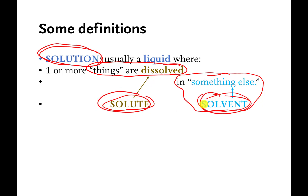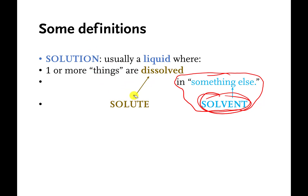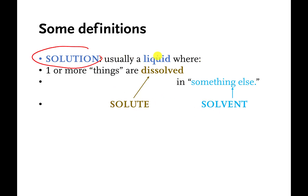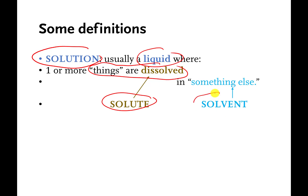The problem is these words all sound pretty similar and are spelled similarly, but they all mean something different. You're going to have to know what they mean because there are equations coming up in later videos where these words are used very precisely. So: a solution is a liquid where at least one thing is dissolved in it; a solute is the stuff that gets dissolved; a solvent is the liquid that does the dissolving.